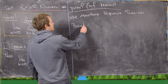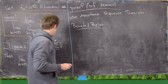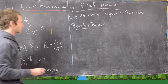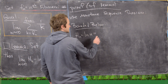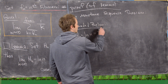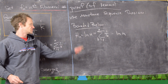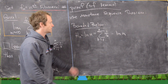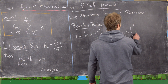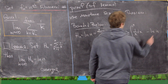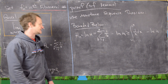Let's first show that it's bounded below. Notice H_n minus the natural log of n equals the sum k equals 1 to n of 1 over k minus the natural log of n, just using the definition of the harmonic number. But this is actually bigger than or equal to the integral from 1 to n of 1 over x dx minus the natural log of n, using the fact that 1 over x is a decreasing function.